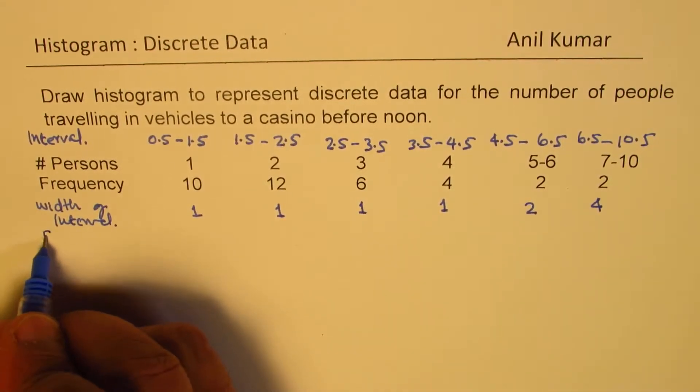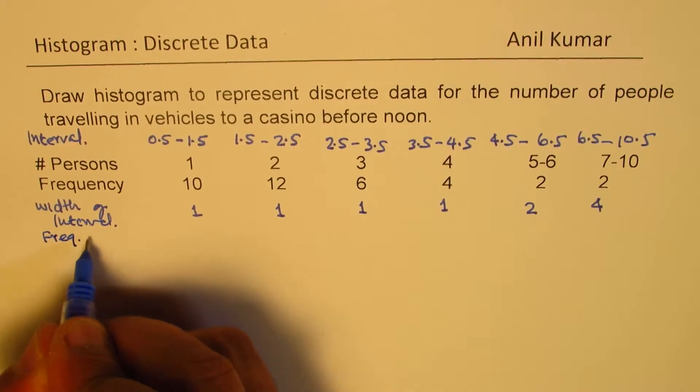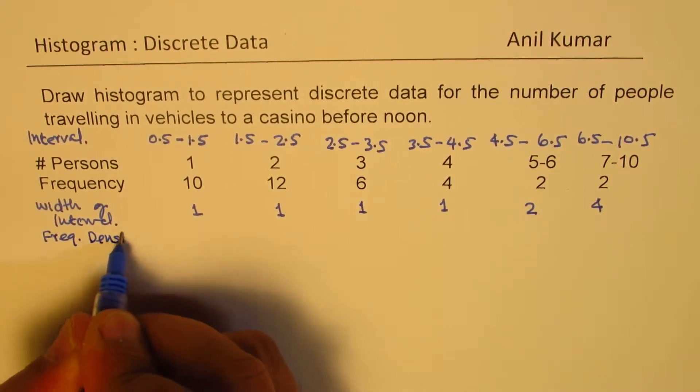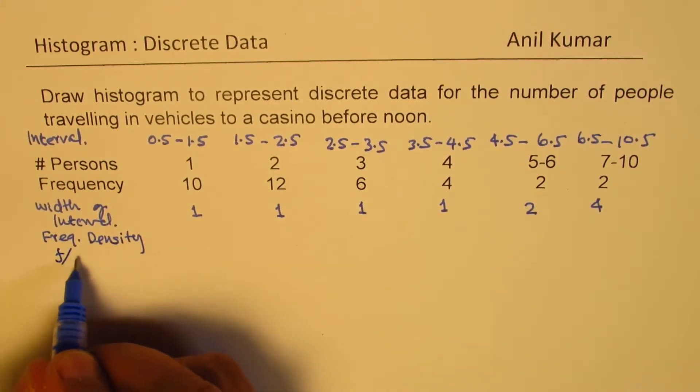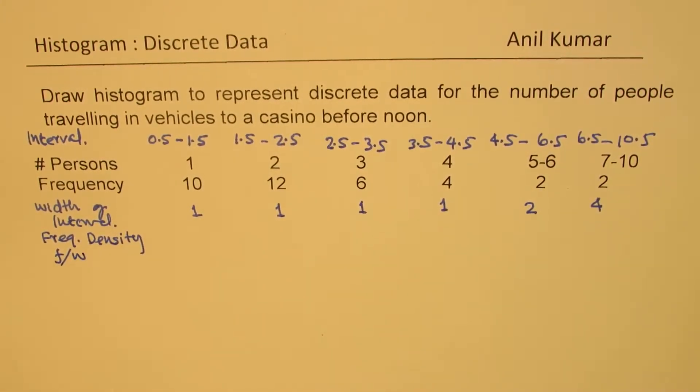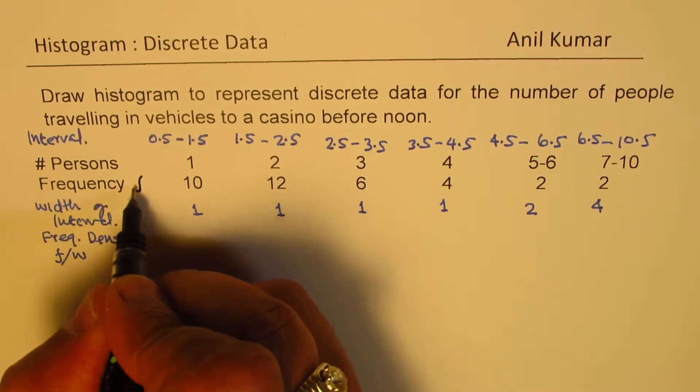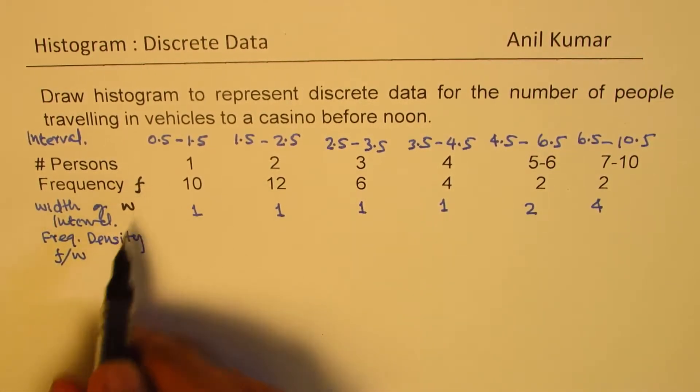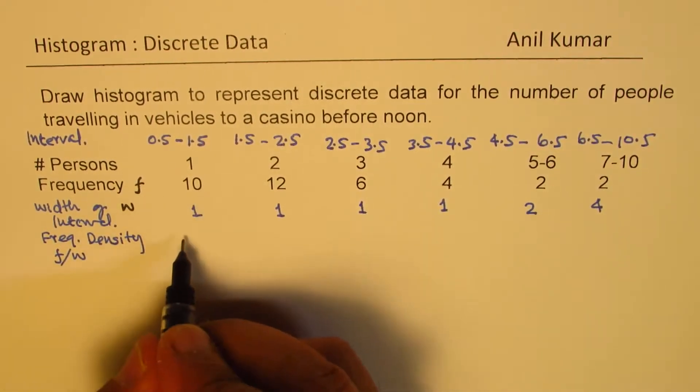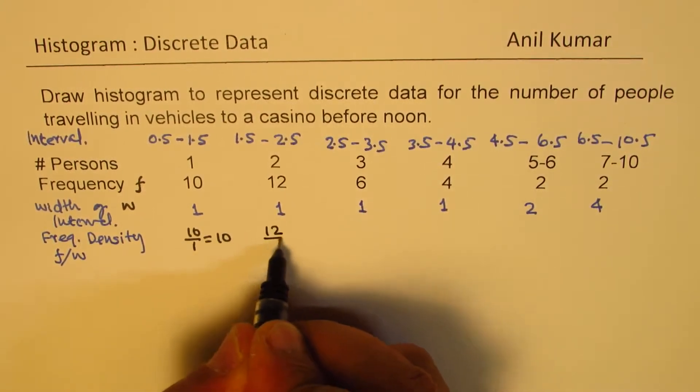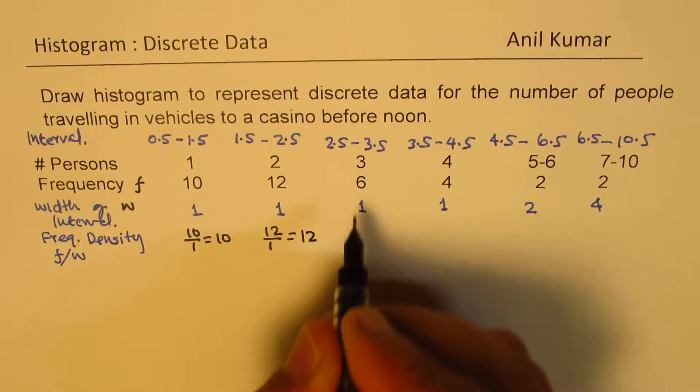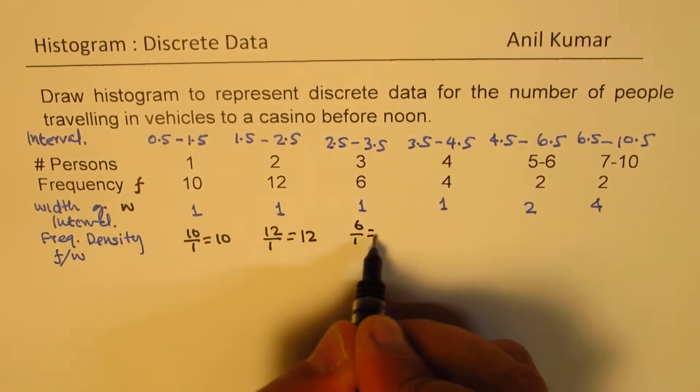Based on this, we can now find frequency density. Now frequency density is the ratio of frequency over width w. So if I write frequency as f and width as w, then their ratio. So it is basically equal to 10 over 1, which is 10. In this case, it is 12 over 1 equals to 12. In this case, it is 6 over 1, which is 6.